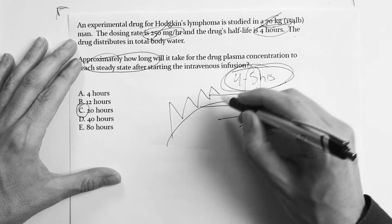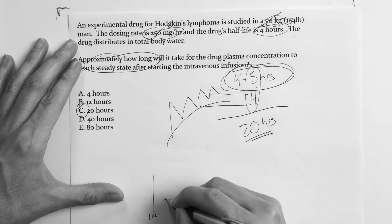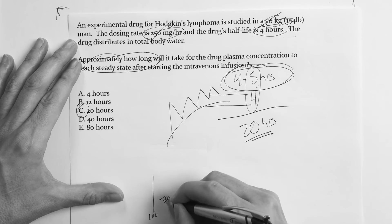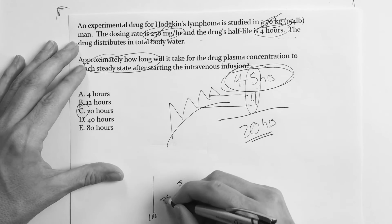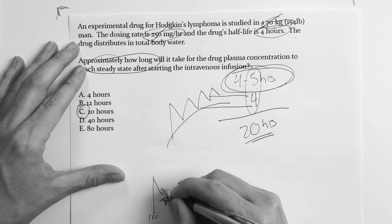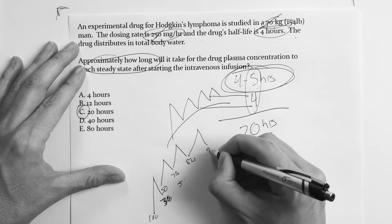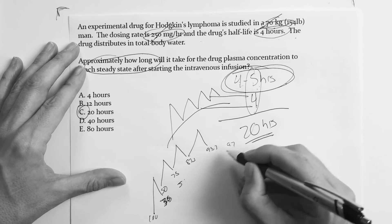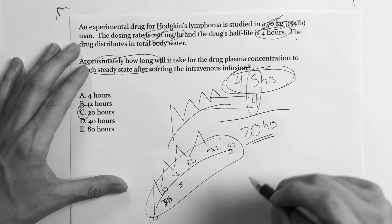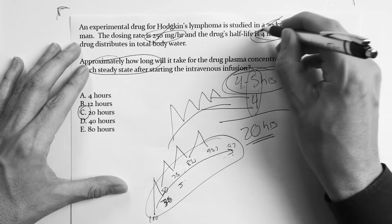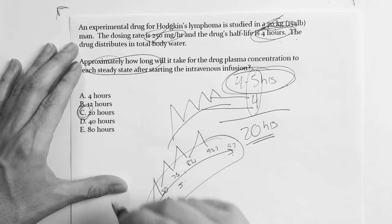Be real familiar with half-lives and know how to interpret them. You've got 50%, then 75%, 87.5%, 93.75%, and then 97% is the fifth half-life. They could ask you about that. But in this question it was just: half-life is four hours, how long to reach steady state — 20 hours.